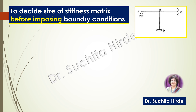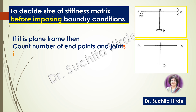Consider the frame shown in the figure. In this frame there is a joint at B and there are three supports at A, C and D. To decide the size of the stiffness matrix before imposing boundary conditions, first of all you have to remove these supports. For a plane frame, count the number of end points and joints. At every point there are three unknown displacements: horizontal displacement, vertical displacement and rotation.